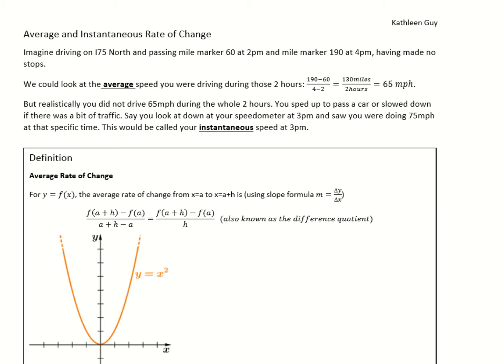We begin by looking at the difference between average and instantaneous rate of change, using a very basic example. Imagine driving on I-75 north and passing mile marker 60 at 2 p.m. and mile marker 190 at 4 p.m., having made no stops. We could look at the average speed during those two hours: from 60 to 190 is 130 miles divided by 2 hours, giving an average speed of 65 miles per hour.